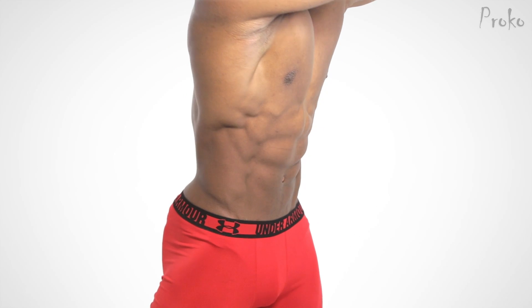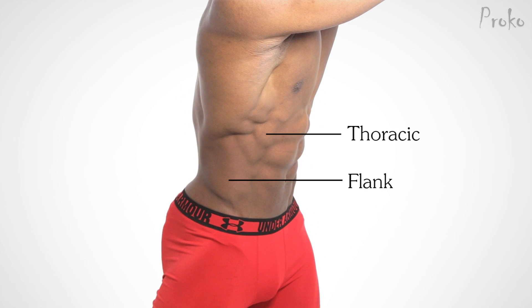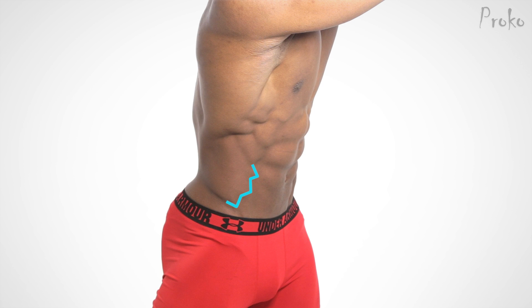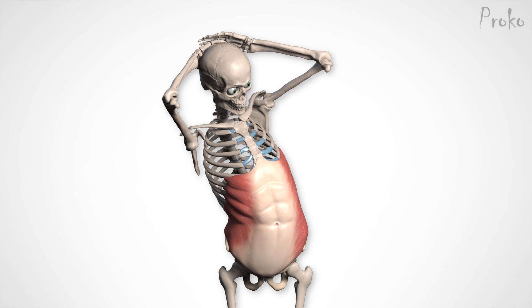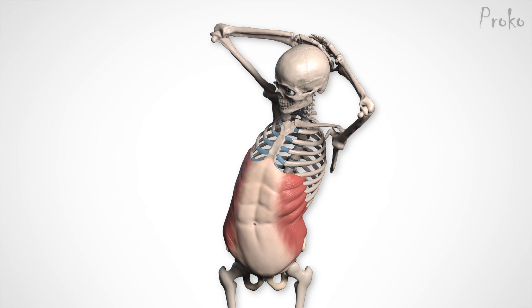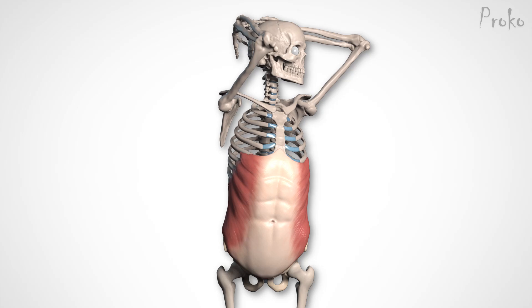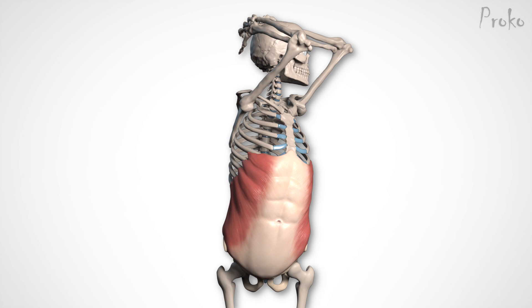When the oblique is flexed, you'll see digitation on the thoracic portion. The flank portion stays smooth, except maybe a hint of the digitation along the medial edge. The motion that will flex the obliques most is a twisting and bending combo — basically the angle of the muscle fibers. When twisting without any bending, there's actually little effect on the oblique, as the lumbar vertebrae are very limited in their twisting range of motion.